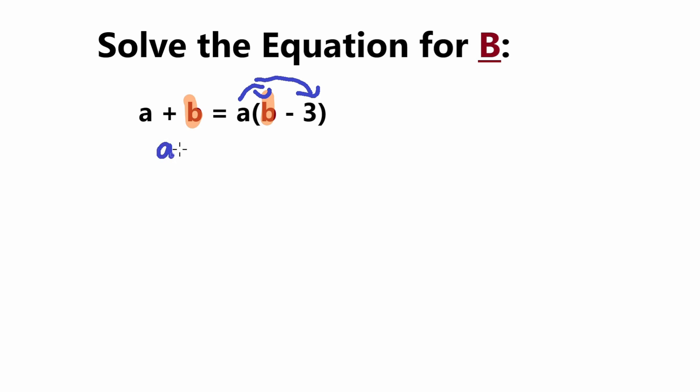So our a plus b stays the same, is equal to, so a times b would be ab minus a times 3. So I'll just call that 3a. Okay, so we got that done.